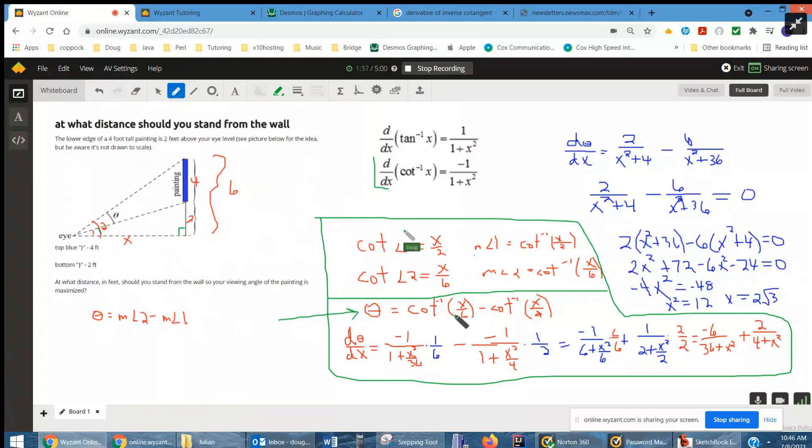Theta is equal to the inverse cotangent of x over 6, which was the measure of angle 2, minus the inverse cotangent of x over 2. That's a function of theta depending on x to find out when theta achieves a maximum or minimum value.